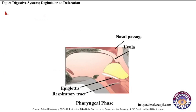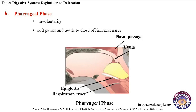The second phase is the pharyngeal phase. This phase occurs involuntarily when food enters the pharynx. Impulses are sent to the deglutition center in the brain. The brain signals the soft palate and uvula to close off internal nares to prevent reflux of food into the nasal cavity. At the same time, impulses are sent to the epiglottis to seal off the larynx to prevent the entry of food into the respiratory tract.